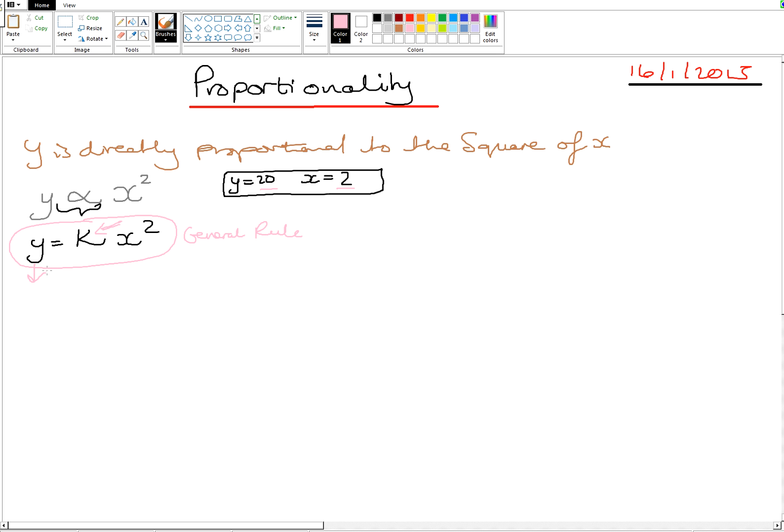So what is the Y value in this particular instance? Y value is equal to 20. And what is the X value equal to? 2. So Y is 20, K is K, and X squared is 2 squared. We are happy with that. We are going to establish the K value.